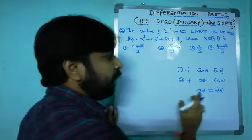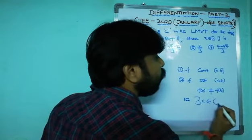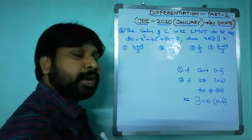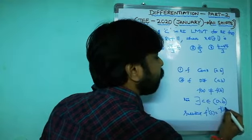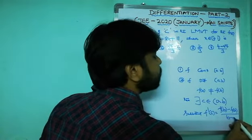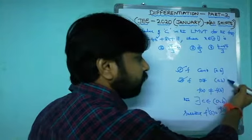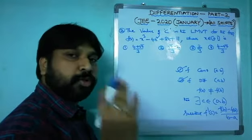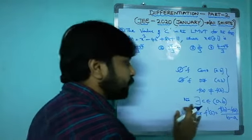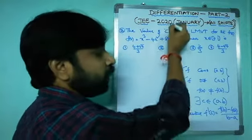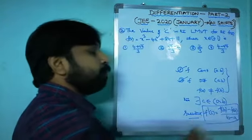When f(a) ≠ f(b), there exists c ∈ (a,b) such that f'(c) = [f(b) - f(a)] / (b - a). This is Lagrange's Mean Value Theorem. When all three conditions are satisfied, LMVT exists and we find c using this formula.